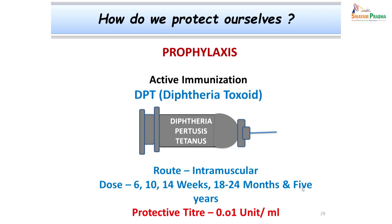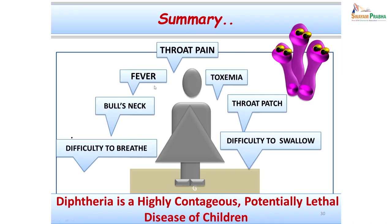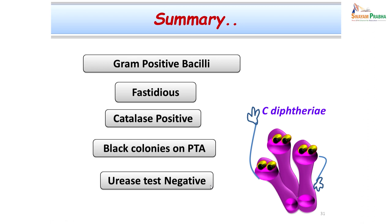We have covered almost all points in this class. To summarize: we have seen a case with throat pain, fever, bull's neck, toxemia, and difficulty eating and breathing — a case of diphtheria, which is a highly dangerous, potentially lethal disease of children. Key points about this organism: it is a very peculiar Gram-positive bacillus, fastidious in nature, catalase positive, produces black-colored colonies on potassium tellurite agar, is urease negative, and is arranged in a typically cuneiform or Chinese letter pattern having metachromatic granules. Knowledge about the organism and the disease will help you have the right approach for diagnosis and timely management of patients.